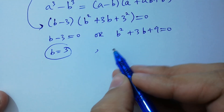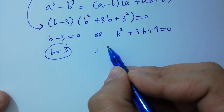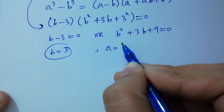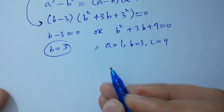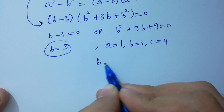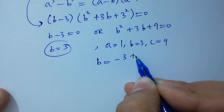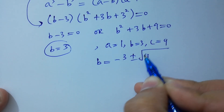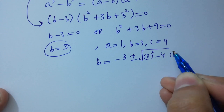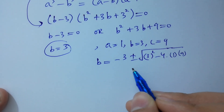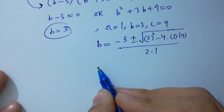For the quadratic B² plus 3B plus 9 equals 0, we apply the quadratic formula with a equals 1, b equals 3, c equals 9. B equals (minus 3 ± √(9 minus 36)) / 2.